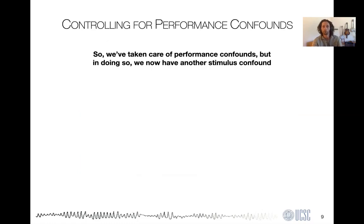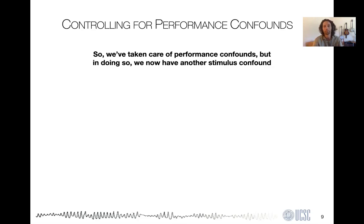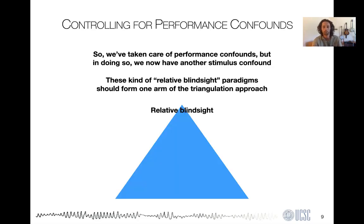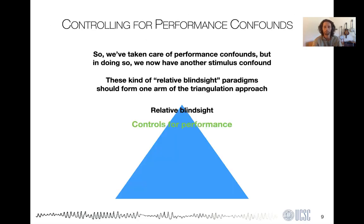This is just one example of how we can control for performance confounds. But this is where triangulation comes in: by introducing two different stimulus conditions to control for performance, we've introduced another confound — a stimulus confound, since the high positive-evidence condition is a different stimulus. All relative blindsight paradigms suffer from this. Therefore, I argue this approach should really be just one arm of the triangulation method.